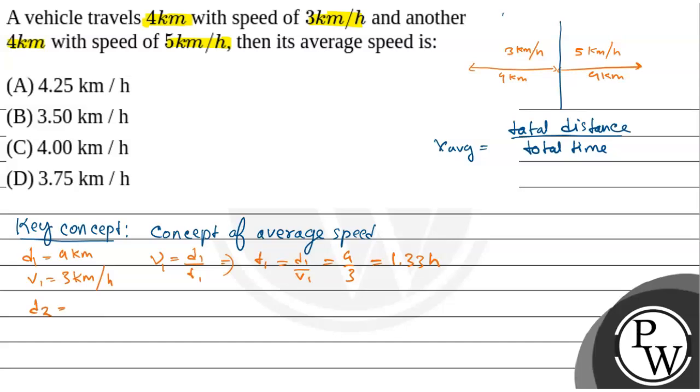Similarly, D2 is equal to 4 km. So in the second case, the time T2 is equal to 4 by 5, which is equal to 0.8 hours.